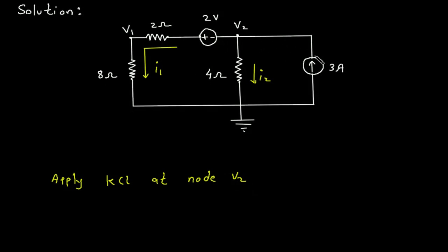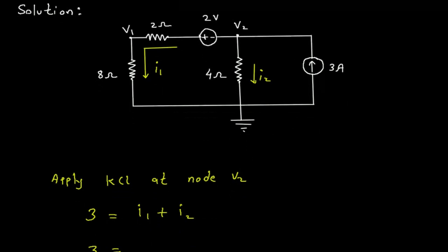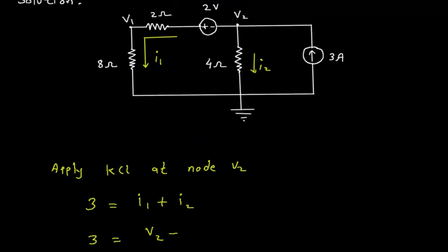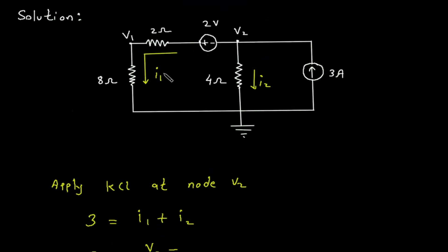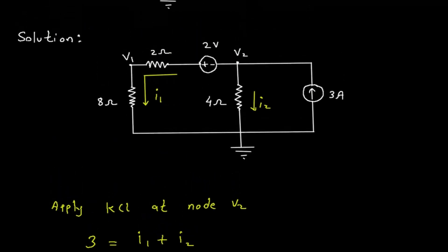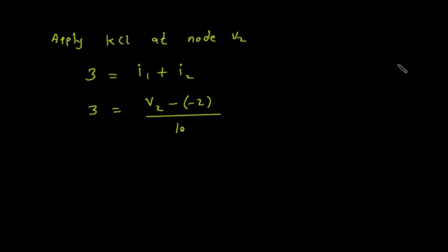The summation of all the entering current at this node is 3, equal to the summation of all the leaving current, which is I1 plus I2. I1 is V2 minus (minus 2) divided by the resistance — since this terminal is positive and this is negative — so this is (V2 minus (−2)) divided by (8 plus 2), which is 10 ohms.